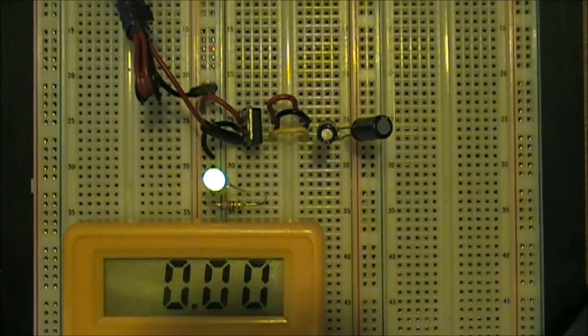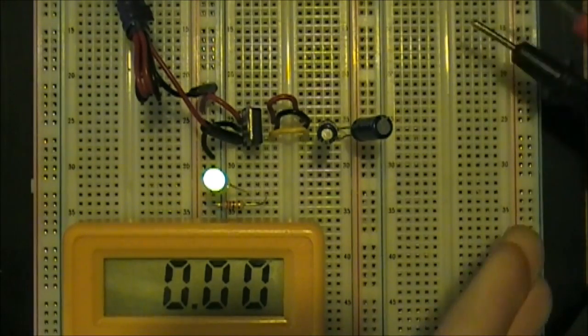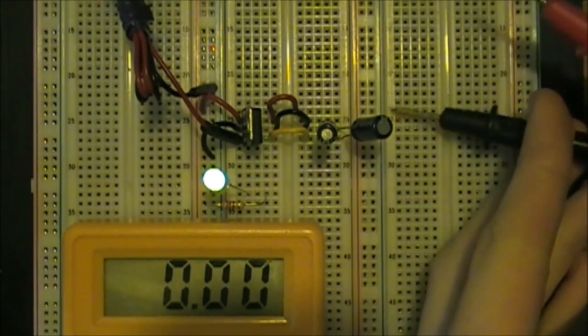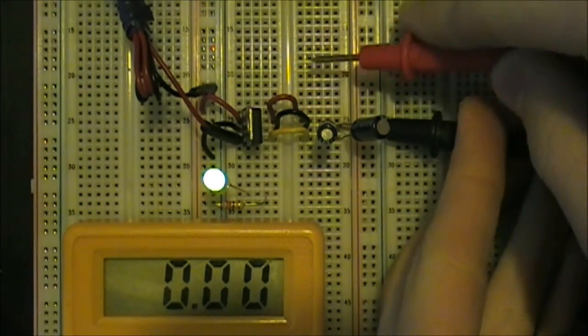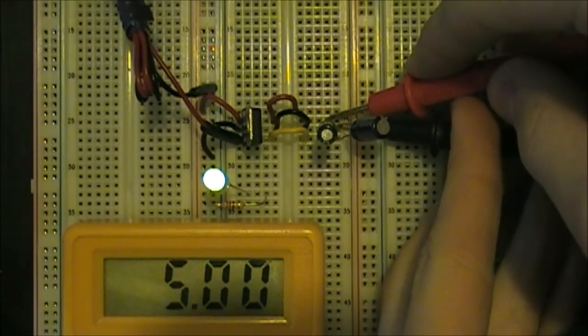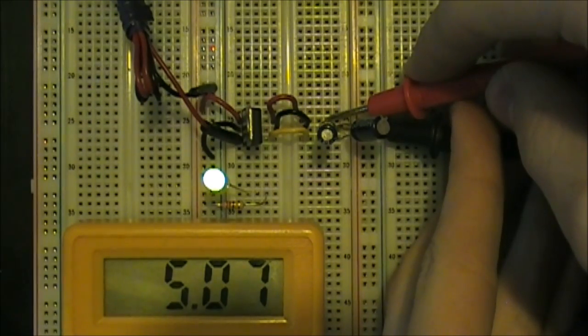So to verify that we actually are getting 5 volts out of our voltage regulator, we got a multimeter set up, and we'll just measure between ground and the output, and we get 5.07, which is within the tolerance of the datasheet.